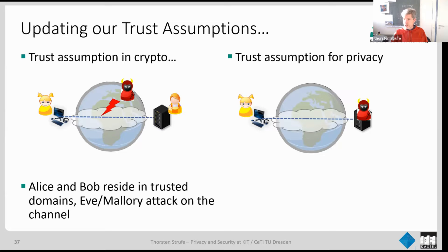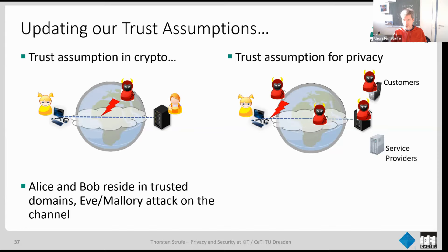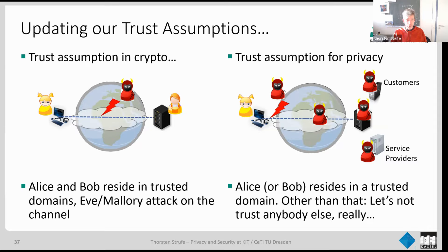Sometimes there are more adversaries to consider: Alice may not trust her internet service provider, or someone on the network. Even hiding content with encryption still leaves metadata visible. A whistleblower may not want the ISP to know she's communicating with Bob at all. Facebook customers getting access to data, or additional service providers helping provision the service — all are potential untrusted entities. For privacy, the approach is: reduce the amount of trust needed in anybody as much as possible.